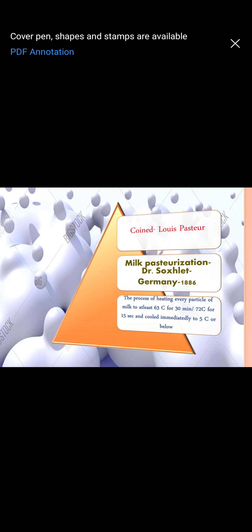Now, if we have to define pasteurization, it is the process of heating every particle of milk to 63 degree centigrade and maintaining it for 30 minutes, and then cooling it to 5 degree centigrade or below. Or, heating every particle of milk to 72 degree centigrade and maintaining it for 15 seconds, and then cooling to 5 degree centigrade. This is called pasteurization.